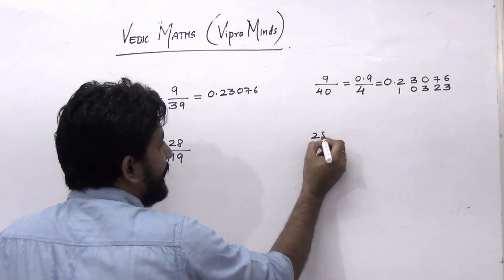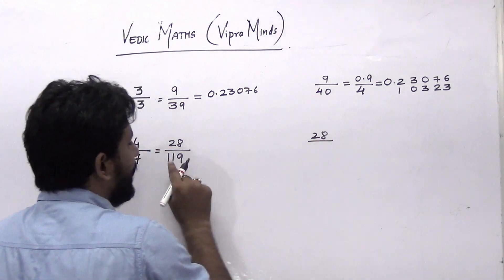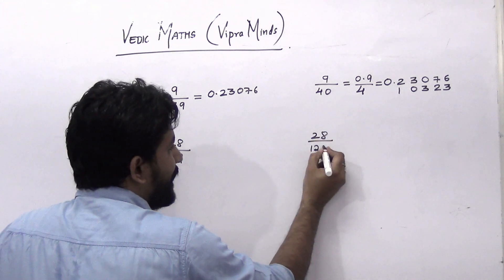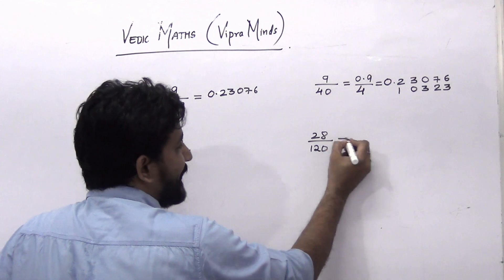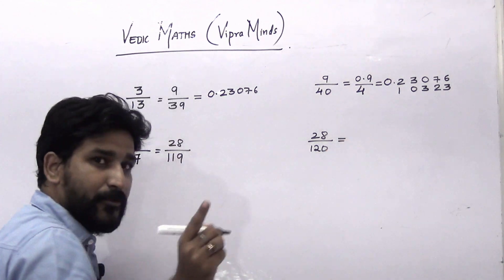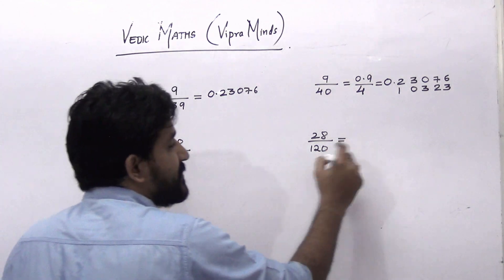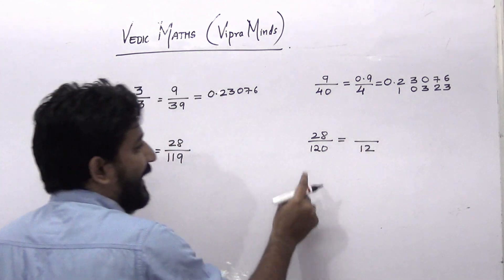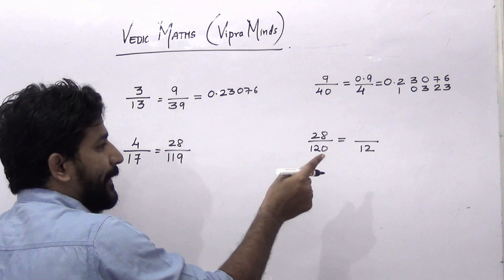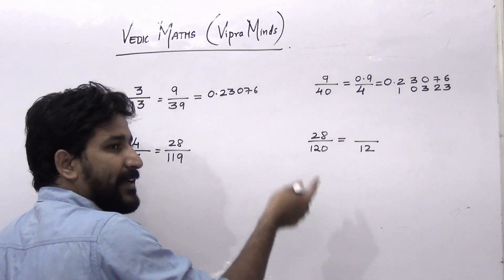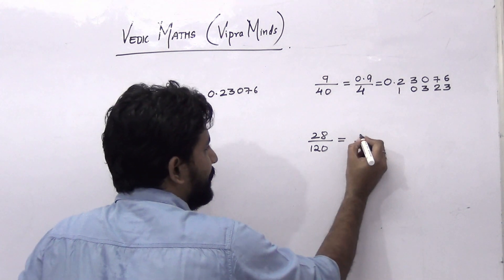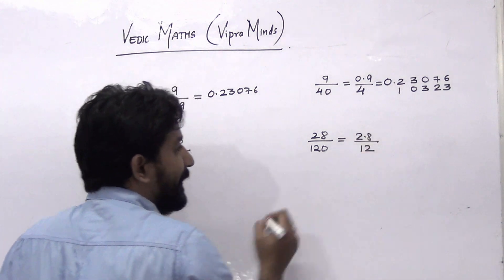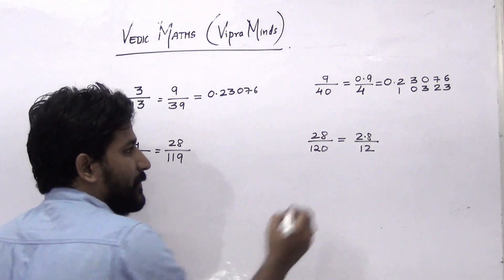So it is 28 divided by 119. Increase 119 by 1, so it will be 120. The next step: remove the 0 from the denominator and shift the point on the left hand side by 1 decimal place. So it becomes 2.8 divided by 12.